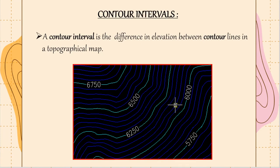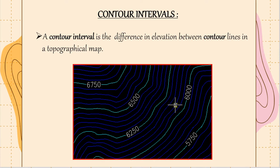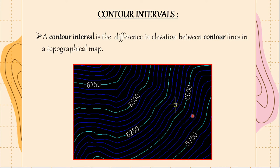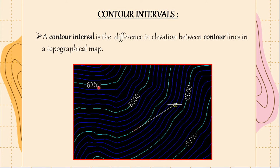The next topic is contour intervals. A contour interval is the vertical distance or the difference in elevation between two contour lines in a topographical map. Usually there are different contour intervals for different maps. Considering the size of the area to be mapped, contour intervals are assumed. For example, in this map you can see an interval of 250 — the difference between all the contour lines is 250: 5,750 then 6,000 then 6,250, 6,500, 6,750. The difference of the contour intervals in this image is 250.